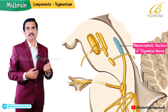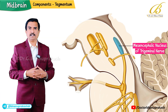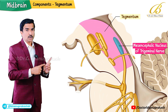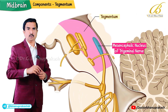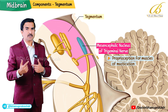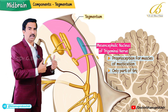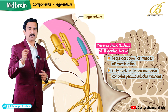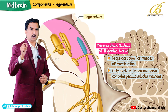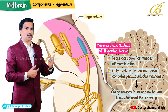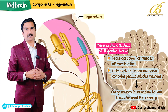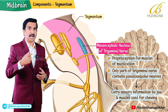The mesencephalic nucleus of the trigeminal nerve is a sensory nucleus located in the tegmentum. It plays an important role in proprioception, the sense of body position, for the muscles of mastication. It is unique in that it is the only part of the trigeminal nerve that contains pseudo-unipolar neurons, which typically reside in the ganglion of the nerve. These neurons carry sensory information related to jaw and chewing muscles, crucial for understanding the position and movement of the jaw during chewing.